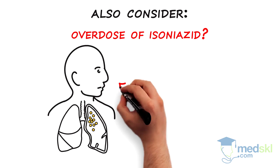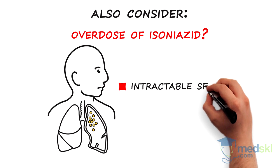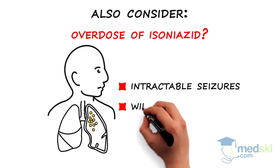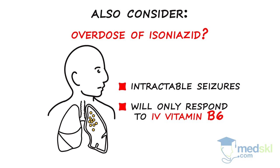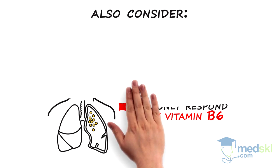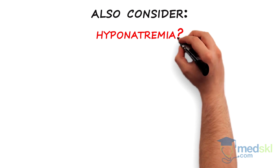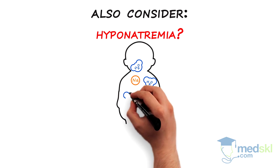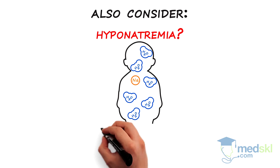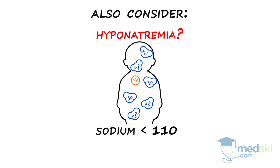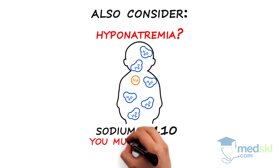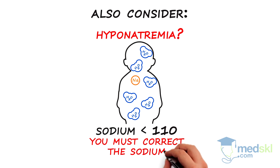An isoniazid overdose can present with intractable seizures and will only respond to intravenous vitamin B6. Finally, could this be a form of hyponatremia? If the patient has a sodium of less than 110 and is actively seizing, you must correct the sodium — but not too fast, because that can cause brain edema.